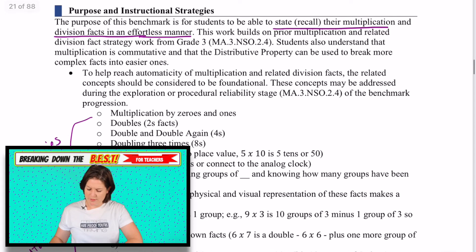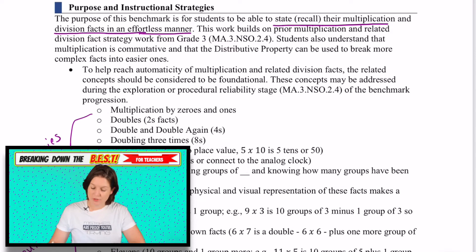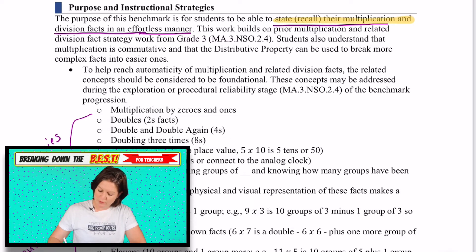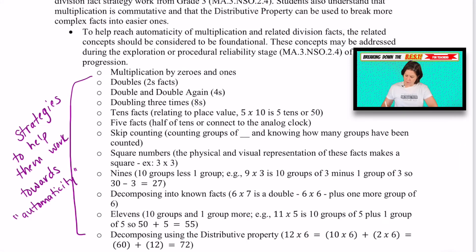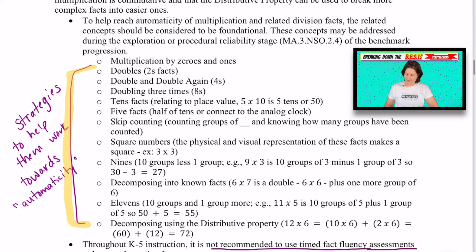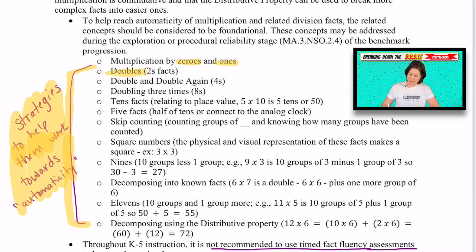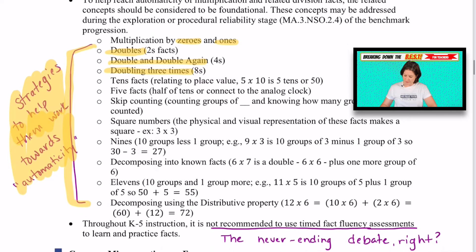Let's see what jumped out in the purpose and instructional strategy section. It says the purpose of this benchmark is for students to be able to state or recall their multiplication and division facts in an effortless manner. It also breaks down some strategies to help students work towards that automaticity: focusing on multiplying zeros and ones, the doubles, the double and double again, and the doubling three times for the eights, and so on.